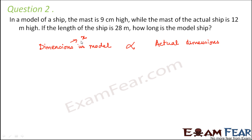Let's assume that this is represented by a quantity x, this is represented by y. So in the problem x1, that is in the model, the mast is 9 cm high. So x1 is 9 cm and what is the corresponding measurement? That is what is the height of the mast in the actual ship? In the actual ship, the height is 12 meters. So y1 will be equal to 12 meters.